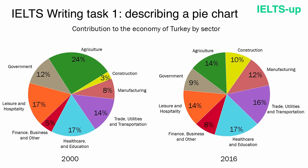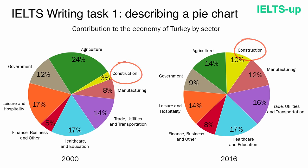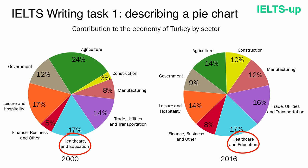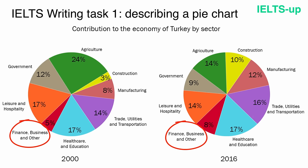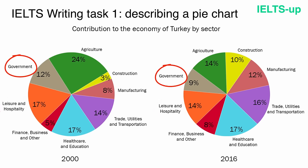Each of these two pie charts shows many economic sectors, namely: Agriculture, Construction, Manufacturing, Trade, utilities and transportation, Healthcare and education, Finance, business and other services, Leisure and hospitality, and Government.